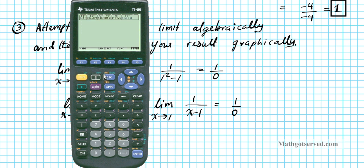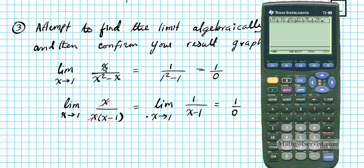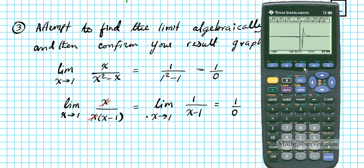Let's take a look at the graph on my calculator. I'm going to plug the original function into the graphing menu and generate the graph. Diamond Y will take you to the graphing window. We enter: X divided by parentheses X raised to the second power minus X, then press Enter. Let's verify the function entered matches what we have — it looks good. Diamond F3 will generate the graph. Looking at the graph closely, we have a discontinuity. We're looking at x equals 1, so let's trace the cursor there. Press F3, type 1, press Enter — and it shows as undefined.